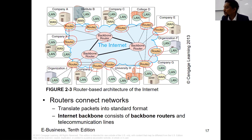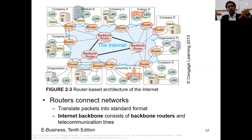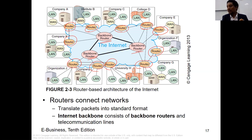There are also backbone routers. The difference is that these are more powerful and larger routers. For example, when all computers in Korea — in offices, universities, different places — are connected with their LANs, each city like Suwon is connected with Seoul, and Seoul computers are connected with Daegu computers through routers. But computers in Korea can be connected to computers in China, Europe, or the US using the backbone router.